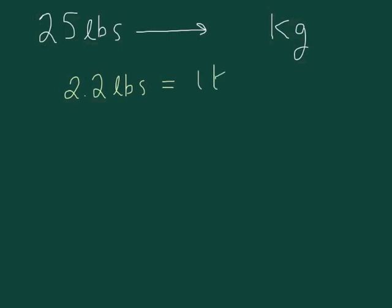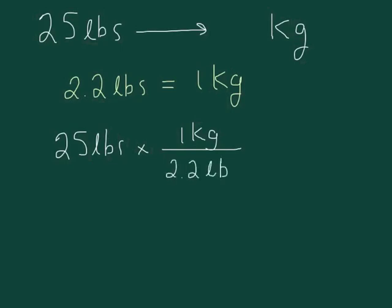So 2.2 pounds is equal to 1 kilogram. 25 pounds, we want to convert into kilograms, so essentially what we're doing is multiplying it by a ratio of 1 kilogram for every 2.2 pounds. Now that ratio of 1 kilogram over 2.2 pounds is actually just the number one, so we haven't changed the question at all.